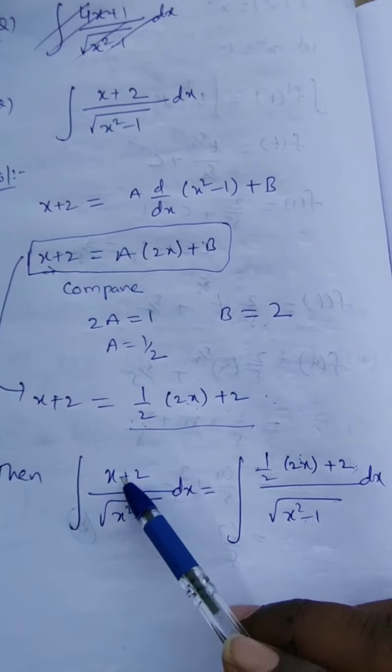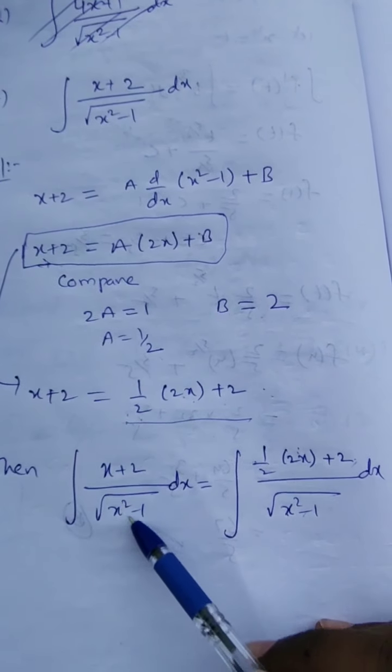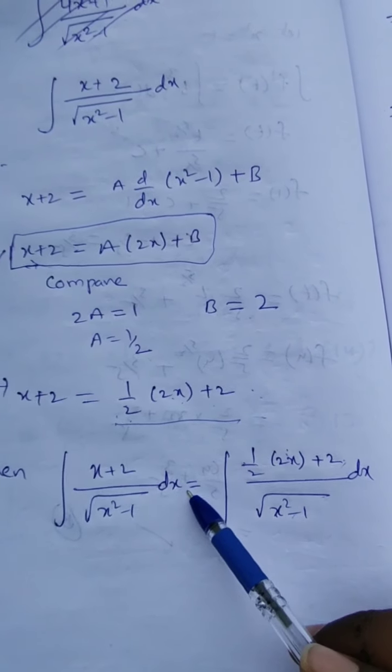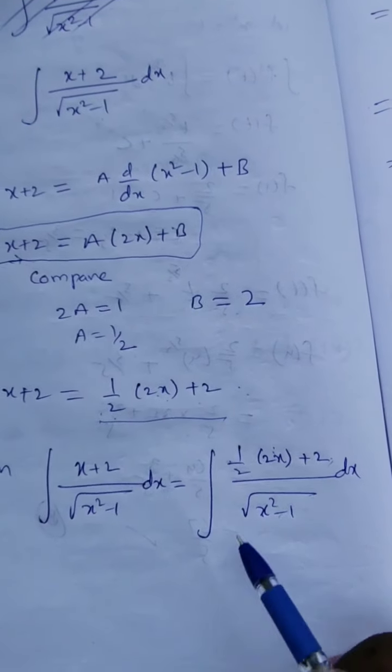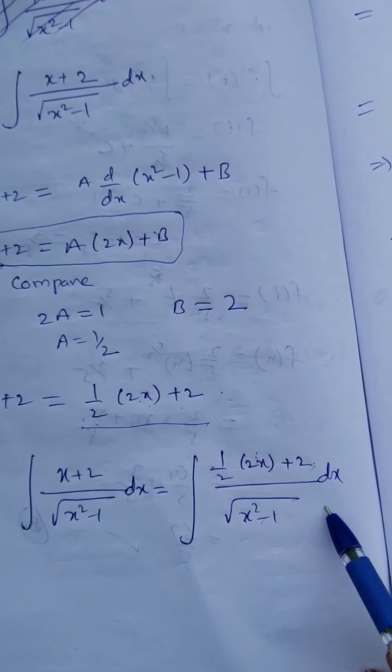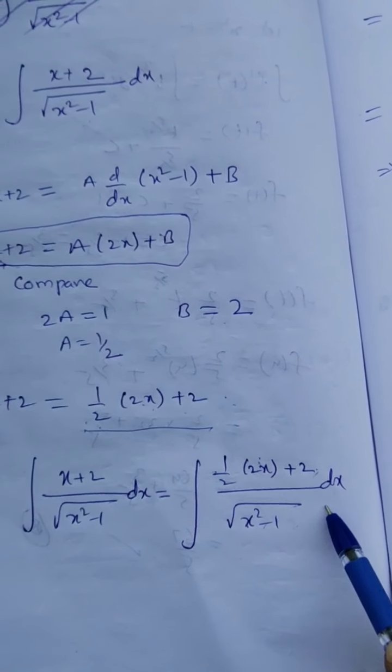So the integration of (x + 2) upon under root of (x² - 1) dx can be rewritten as (1/2) · (2x + 2) upon under root of (x² - 1) dx, substituting the numerator with the expression we found.